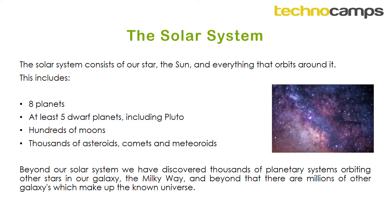So firstly, if we just think about what the solar system actually is — the solar system is everything that travels around our star, the Sun. Our solar system is made up of all the different things that orbit the Sun. This includes the eight planets that we know of, at least five dwarf planets including Pluto, hundreds of moons traveling around these planets, and also thousands of asteroids, comets and meteoroids, which are smaller bits of ice and rock flying around as well.